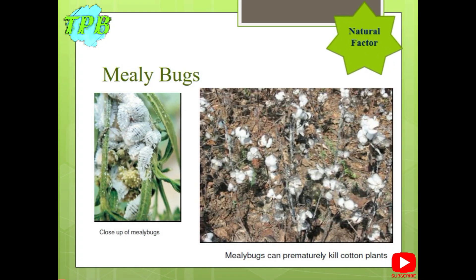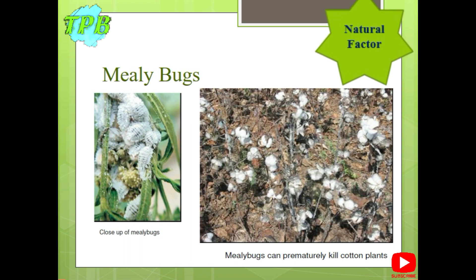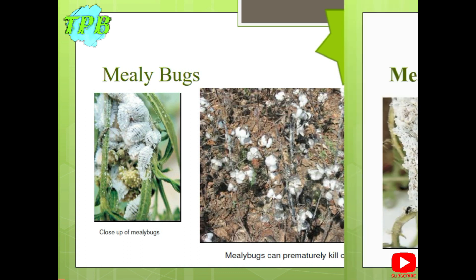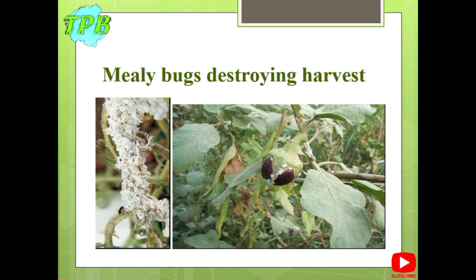Mealy bugs also affect cotton plants. They kill cotton plants even though there might be some harvest. Not only do mealy bugs damage the plant and reduce the harvest, they also reduce the quality of cotton — the cotton may become discolored, affecting the total profit the farmer expects. Mealy bugs affect not only large-scale crops but also everyday harvest and market gardening, as vegetables can also be affected, resulting in lower yields.